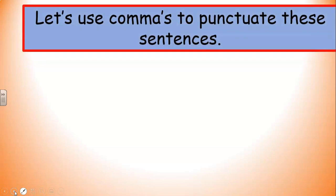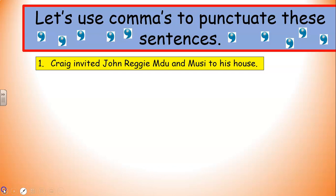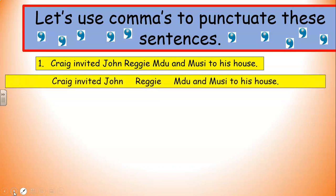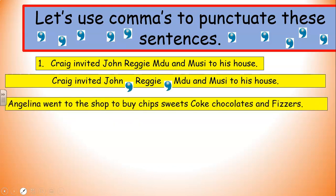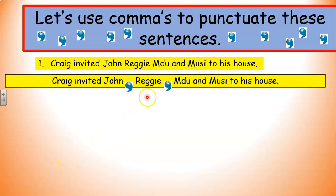Let's use commas to punctuate these sentences. 'Craig invited John, Reggie, Mdu, and Muzi to his house.' Can you tell me where you think those commas are going to go? Remember that commas don't go next to the 'and' — commas don't like to live next door to the 'and'. Craig invited John, comma, Reggie, comma, Mdu, and Muzi to his house. So we only had two commas there, and where the 'and' is, we don't have a comma at all.